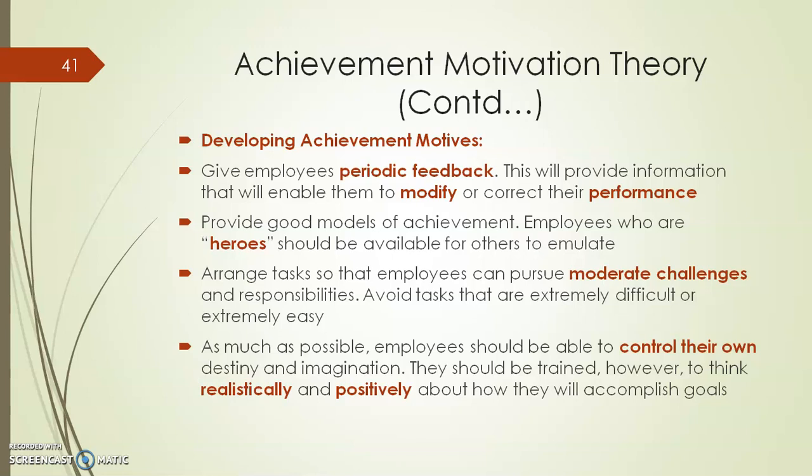As much as possible, employees should be able to control their own destiny. Give employees training — train them realistically and positively on how to accomplish their goals. Tell them what to do, but give them autonomy over how to do it, so that they can work hard on their own terms. High need for achievement works well for field sales persons, stock brokers, and stock traders where people work individually.